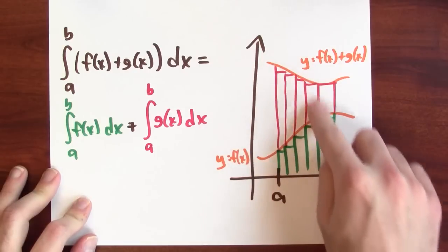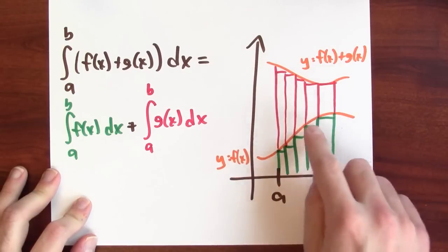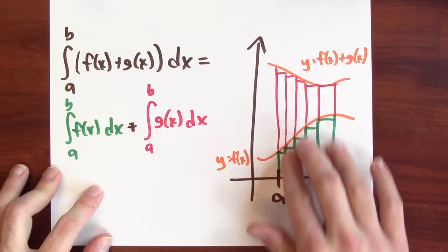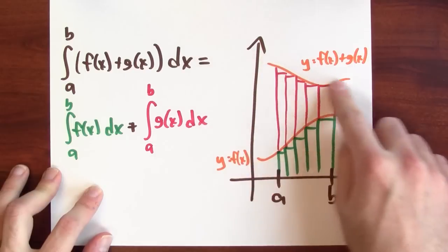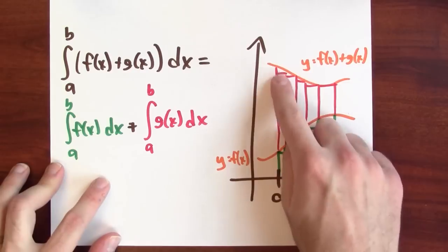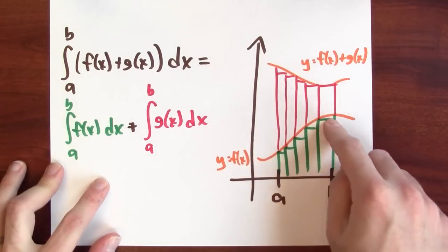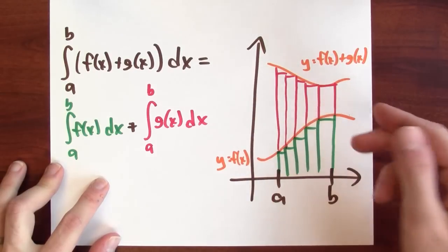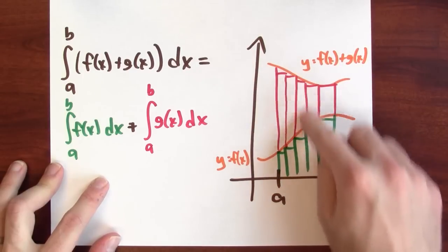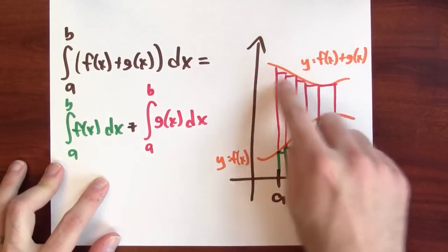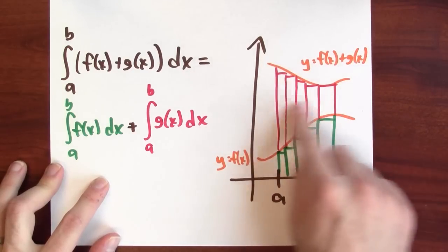And then here in red, I've drawn some rectangles for the Riemann sum of g, but they're sort of shifted up a bit. Because this curve here is the graph of y equals f of x plus g of x. So the heights of these rectangles are actually what I would get if I were to just integrate g of x. The distance between f of x plus g of x and f of x is exactly g of x here in red.